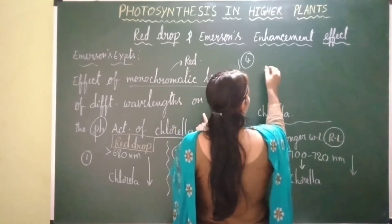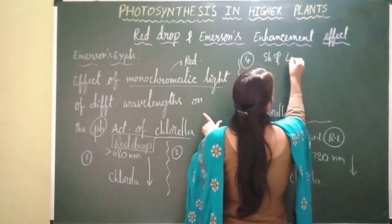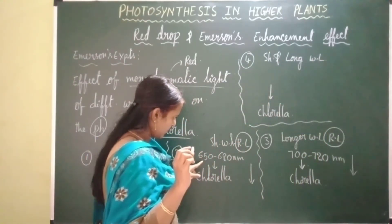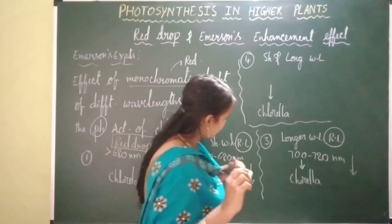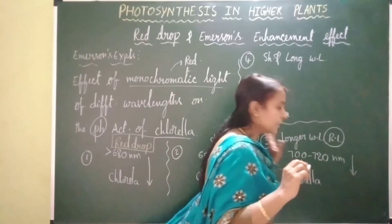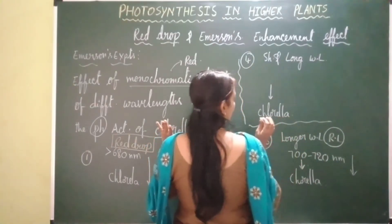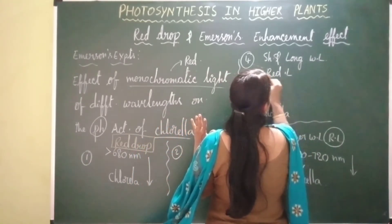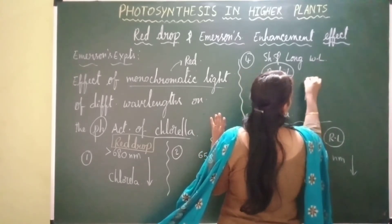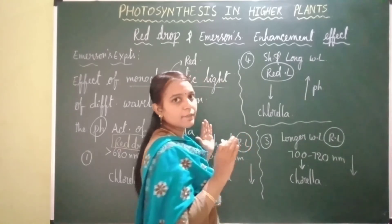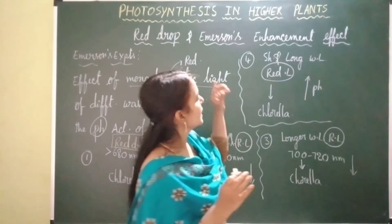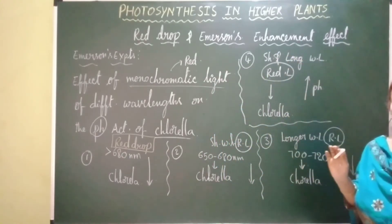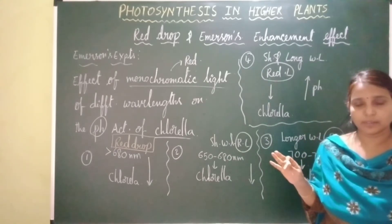The shorter wavelength ranges between 650 to 680 nanometers and the longer wavelength ranges between 700 to 720 nanometers. When Chlorella is exposed simultaneously to both shorter and longer wavelengths of red light, the rate of photosynthesis increases. He called this Emerson's enhancement effect.